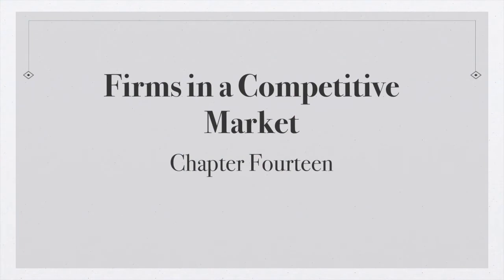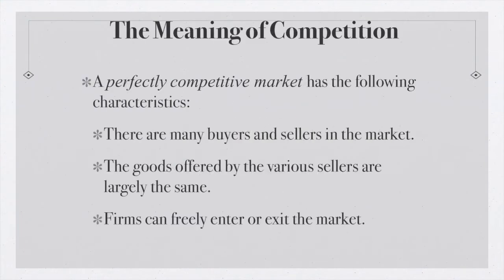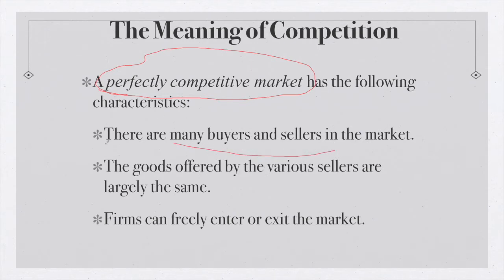Today we're gonna look at firms in a competitive market. A quick recap on what we mean by competition — here we're talking about perfect competition. A perfectly competitive market is one where there are many buyers and sellers, the goods being offered are largely identical, and firms can freely enter and exit the market when they see the ability to make a profit or when the firm is taking losses.